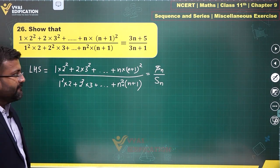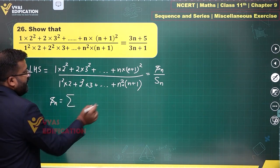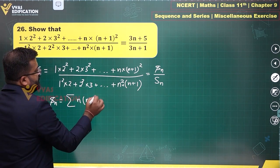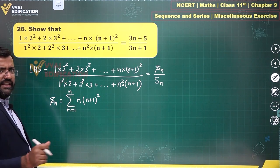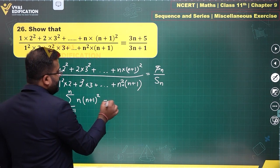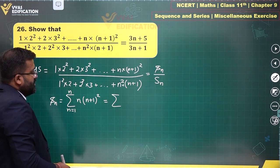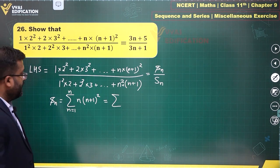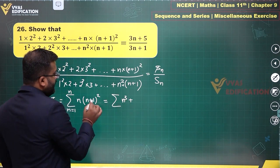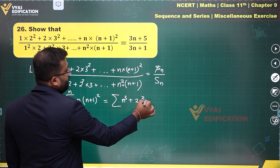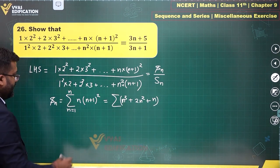Our focus is on finding small sn and capital Sn separately. Small sn equals sigma of n·(n+1)² from n=1 to n. Let's multiply this out: n²·n gives n³, 2n·n gives 2n², and 1·n gives n — so we get n³ + 2n² + n.